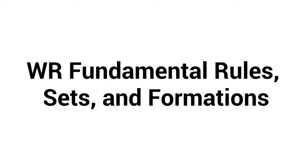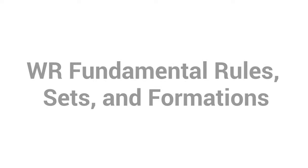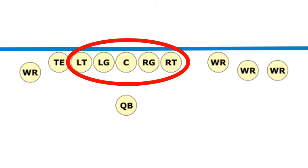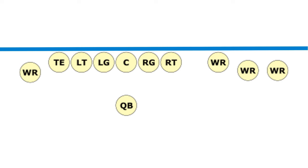Before we completely delve into that, we need to make sure we're all on the same page about the rules of wide receivers and where people can line up. Seven players will always be lined up on the line of scrimmage, and the five players in the middle will be the offensive line. You'll see this on screen. Only two people outside of this core five can be lined up on the line — no more, no less.